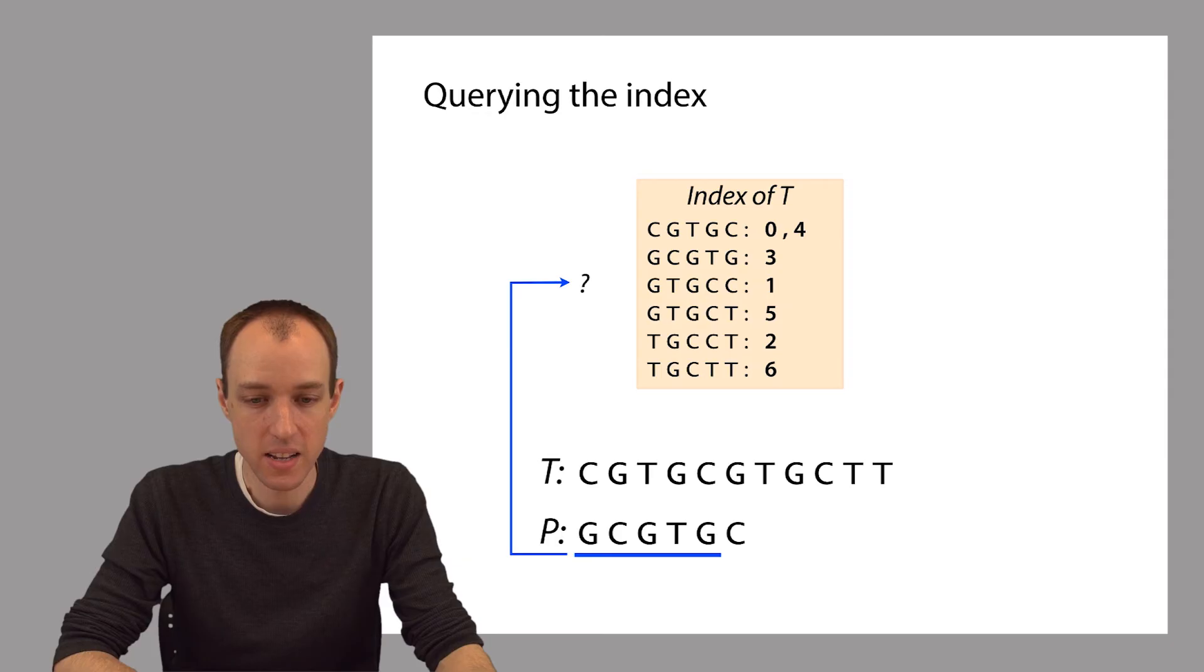We're asking the index, where have you seen this 5-mer before? The index replies that it's seen it at offset 3. So we know that these 5 characters of P, the first 5 characters of P, match 5 characters of T starting at offset 3 within T. But we're not done yet, because we don't know whether the rest of P matches where it should within T. We have to do one more character comparison here, and this additional work that we do is called verification.